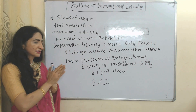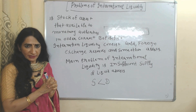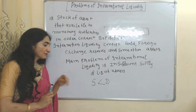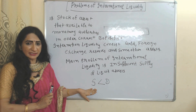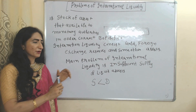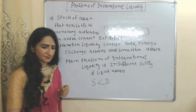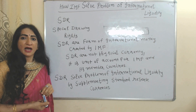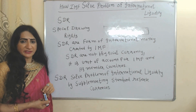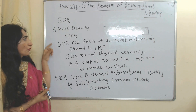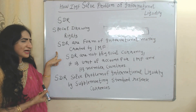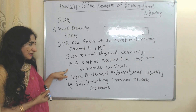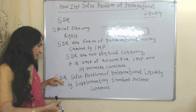The main problem of international liquidity is insufficient supply of liquidity assets — when supply of liquidity assets is less than demand, that is called the main problem of international liquidity. IMF solves this problem through SDR. SDR stands for Special Drawing Rights. SDRs are a form of international money created by IMF. SDRs are not physical currency; they are a unit of account for IMF and its members.